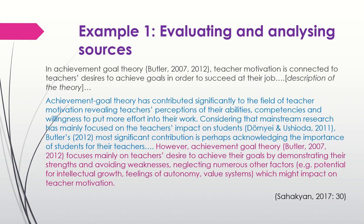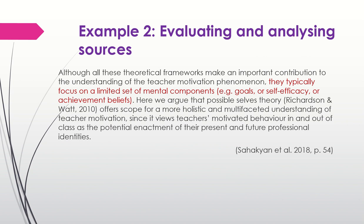Now let's have a look at the second example. After discussing key theories, the researcher evaluates them and emphasizes their limitations. In this section, she basically talks about the limitations of the theories she has discussed. The aim is to explain why those theories were not used. Then she mentions that possible self theory addresses these limitations and offers a more holistic approach. The purpose of this section is to explain why possible self theory was used as a theoretical framework for her study.